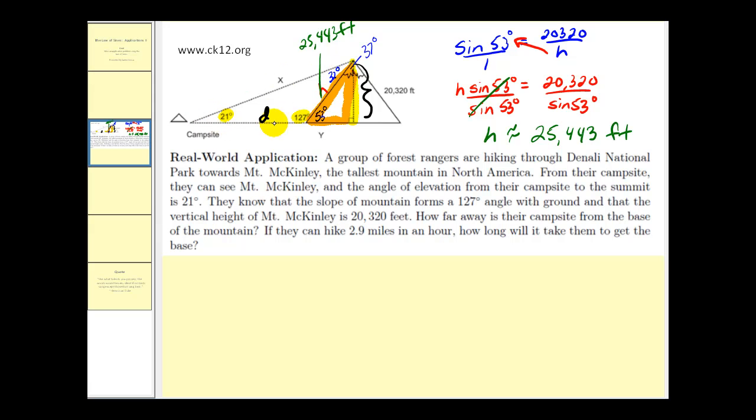So now we can use the law of sines in this oblique triangle to find the length of D. So we would have the sine of 21 degrees divided by 25,443 feet must equal the sine of 32 degrees divided by D, which is the distance we're looking for. Let's cross multiply.